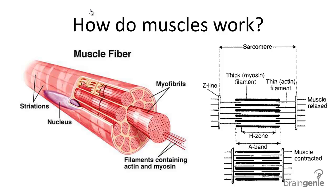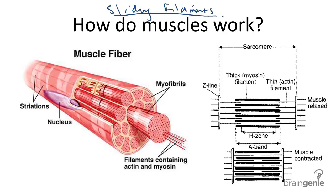What is the sliding filament theory? The sliding filament theory explains that muscles contract by shortening muscle fibers at a sarcomere. The multi-step process where myosin and actin fibers overlap and shorten the length of a muscle cell starts with a myofibril, one part of a muscle cell.